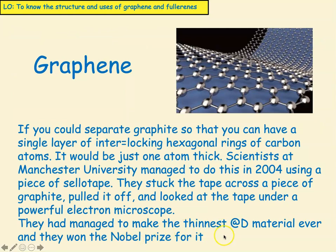If you could separate graphite so that you have a single layer of interlocking hexagonal rings of carbon atoms, it would be just one atom thick. Scientists at Manchester University managed to do this in 2004 using a piece of sellotape. They stuck the tape across a piece of graphite and pulled it off over and over again, and looked at the tape under a powerful electron microscope. They had managed to make the thinnest 2D material ever, and they won the Nobel Prize for it.